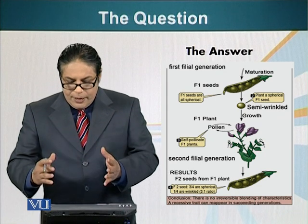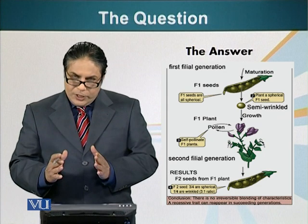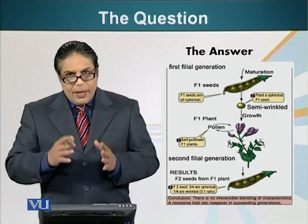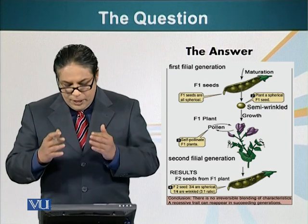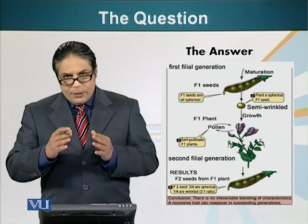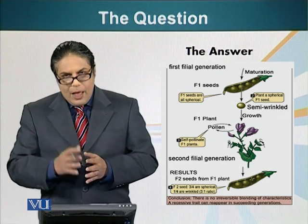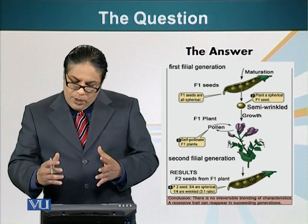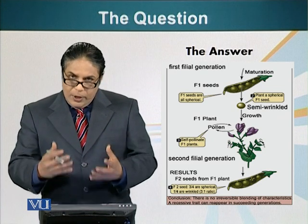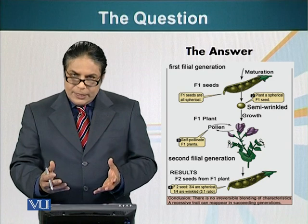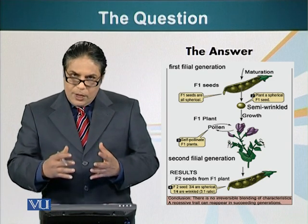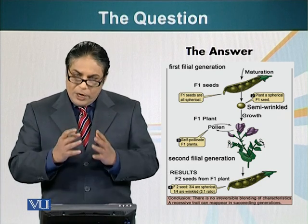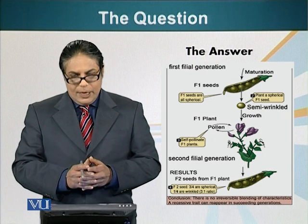Next, he crossed the F1 generation among themselves and obtained the F2, or second filial generation. He saw that in the F2 generation, three out of four seeds were spherical and one out of four seeds were wrinkled. The conclusions — how he used this data to interpret the results and make specific conclusions about the particulate theory — we will look at that in the following segment.